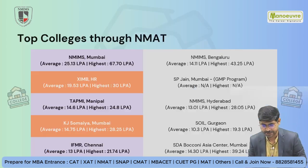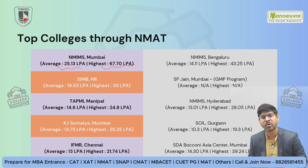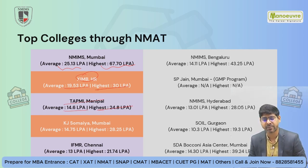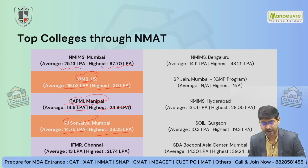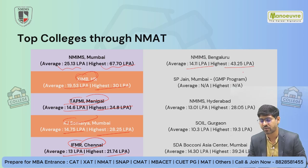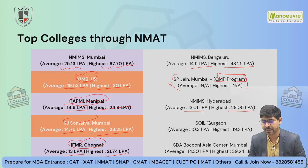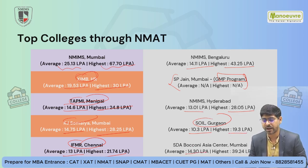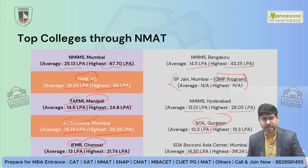NMIMS Mumbai and KJS accept only the first attempt score. Other colleges accept scores from multiple attempts. For placements: NMIMS Mumbai average package is around 19.53 LPA, highest 67 LPA. TAPMI Manipal 14.6 LPA average, highest 24.8 LPA. KJS 14.75 LPA average, highest 48.25 LPA. IFMR 13 LPA average, highest 21.74 LPA. NMIMS Bangalore 14.11 LPA average, highest 43.25 LPA. NMIMS Hyderabad 13 LPA average, highest 28.05 LPA. SDA Bocconi 14.30 LPA average, highest 39.24 LPA.